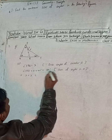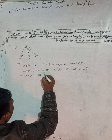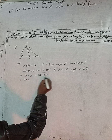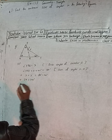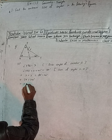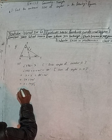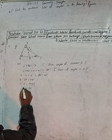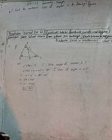This gives us 2X equals 180 minus 40, which is 140 degrees. Therefore X equals 140 divided by 2, which is 70 degrees. So we get X equals 70 degrees.